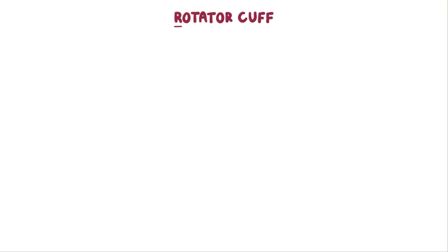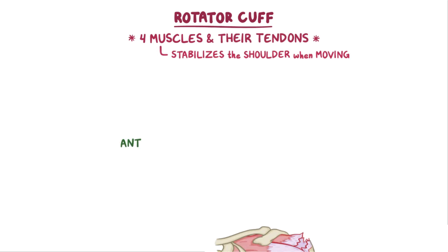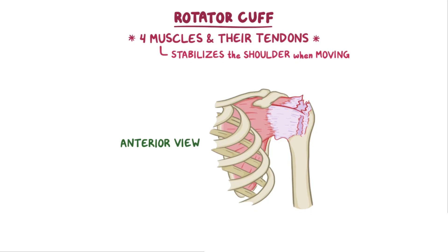The rotator cuff refers to a group of four muscles and their tendons which help to stabilize the shoulder when it's moving, particularly during rotational motion. A rotator cuff tear is when one or more of the tendons of the muscles of the rotator cuff are torn.